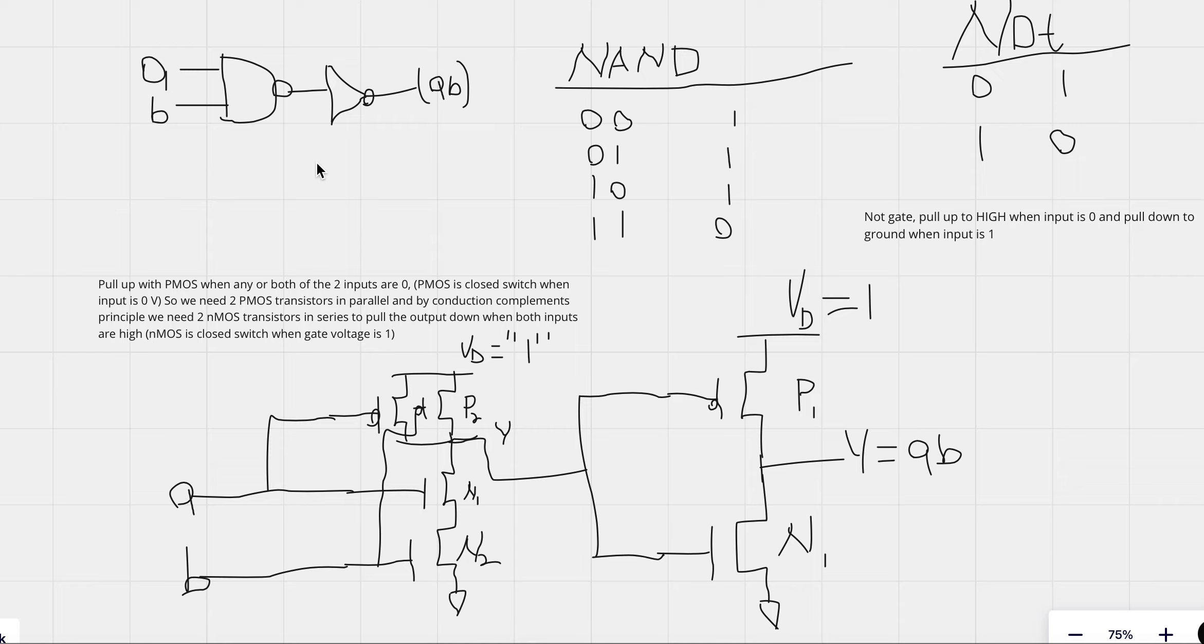So the first thing to know is that it is impossible to build a CMOS AND gate as a standalone, but we can use primitive gates, specifically NAND and NOR, to construct any other logic gate.